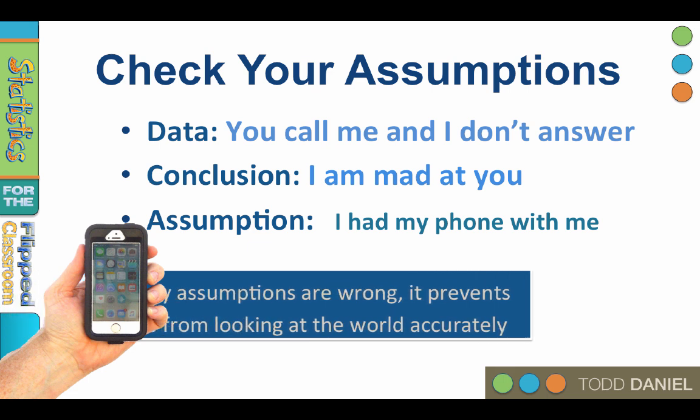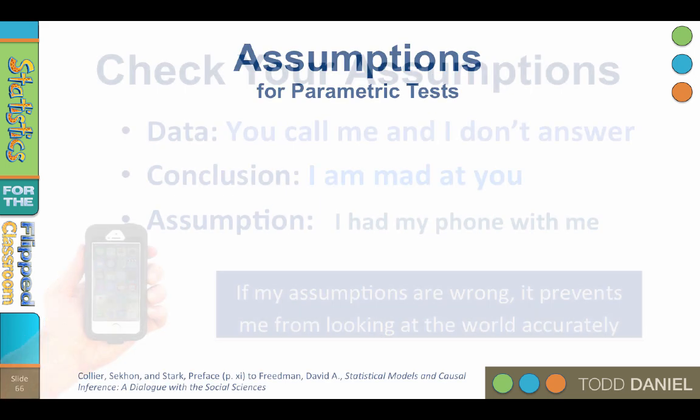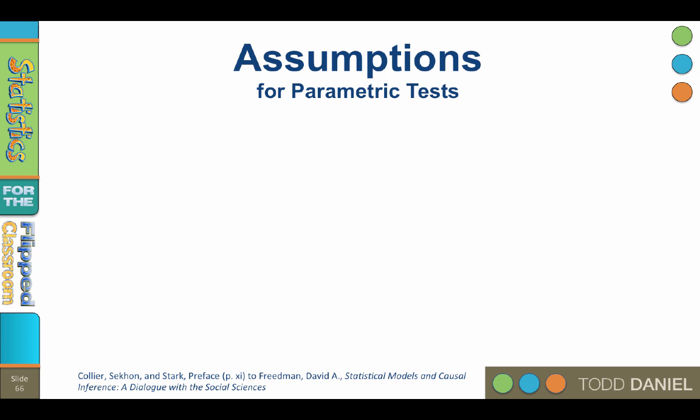But what can we learn about assumptions? If your assumption is wrong, it prevents you from looking at the world accurately. If your assumptions are incorrect, what is going to be true about your conclusions based on those assumptions? Your conclusions are going to be incorrect as well. Now, parametric statistics are built on certain assumptions about the data. And if those assumptions are violated, your conclusions are going to be incorrect as well.